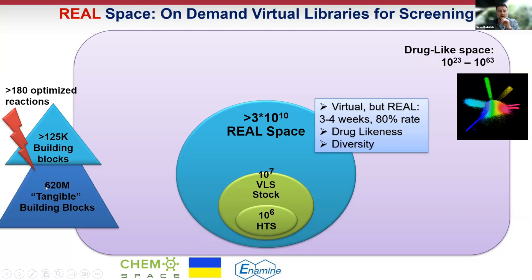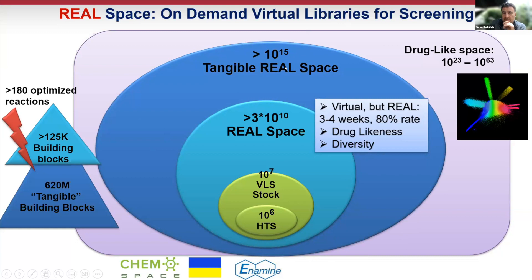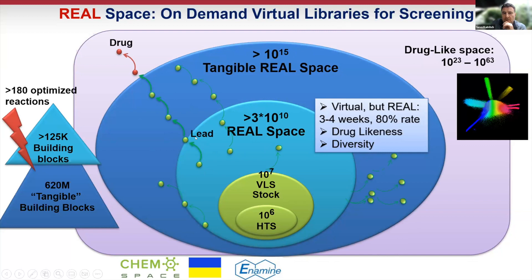Those 125,000 building blocks are just the tip of an iceberg — there are 620 million tangible building blocks. If you count all the combinatorics, it's 10^15 to 10^17 of tangible real space. If you find hits in 30 billion compounds of REAL space, the optimization path to lead and drug actually lies in the same space, which is easy to synthesize — an ocean of compounds that can be systematically screened and optimized.